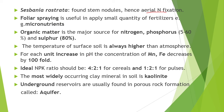Next point is, foliar spraying is usually applied with small quantities of fertilizers. Organic matter is a major source of nitrogen, phosphorus and sulphur. The temperature of surface soil is always higher than the atmosphere. For each unit increase in pH, the concentration of magnesium iron decreases by 100-fold. The ideal NPK ratio should be 4:2:1 for cereals and 1:2:1 for pulses.